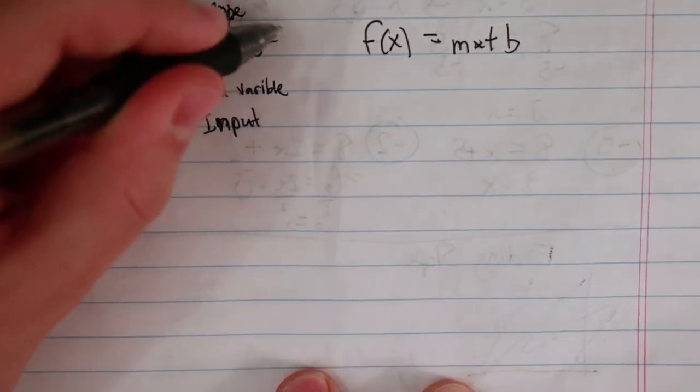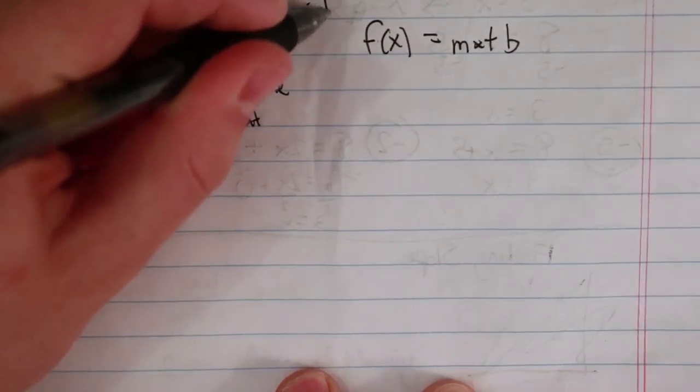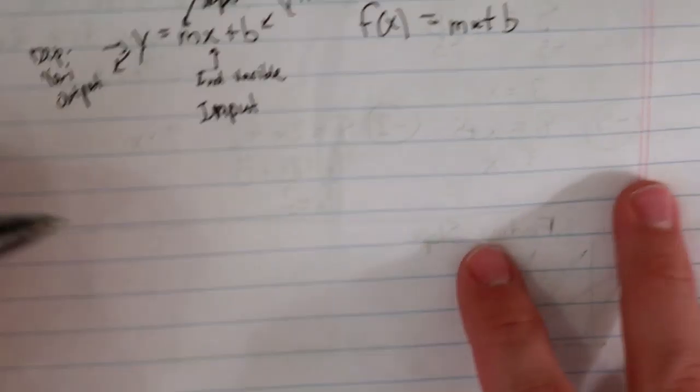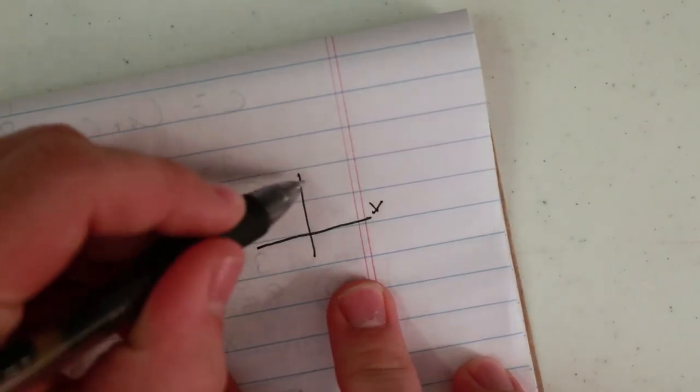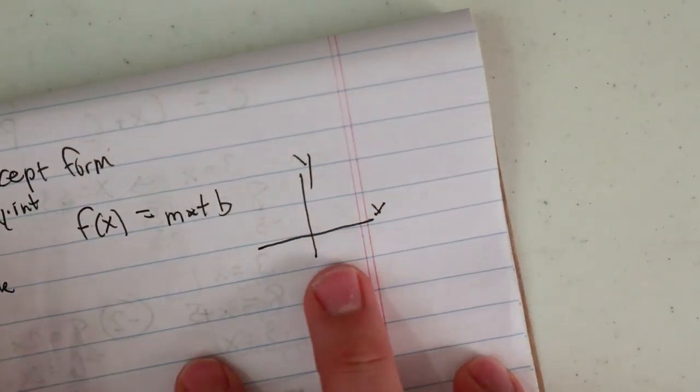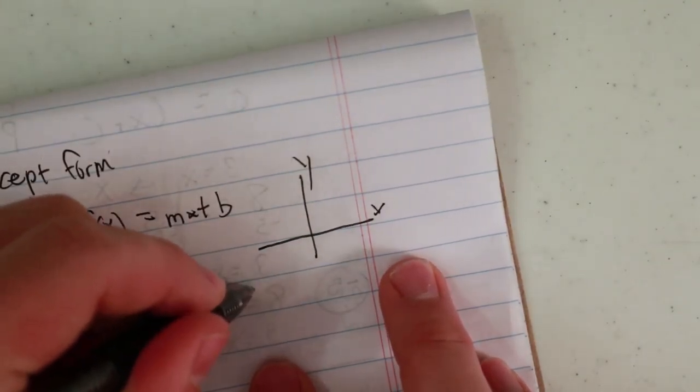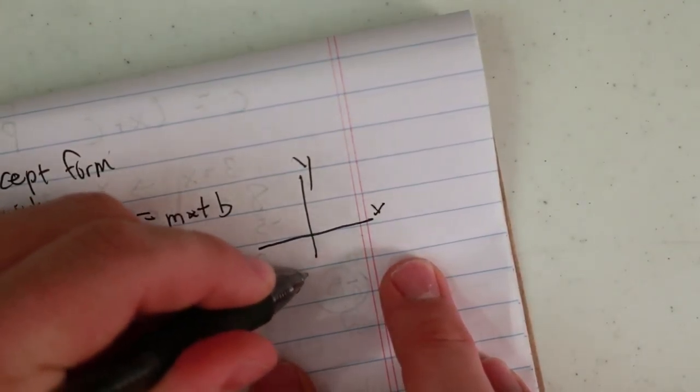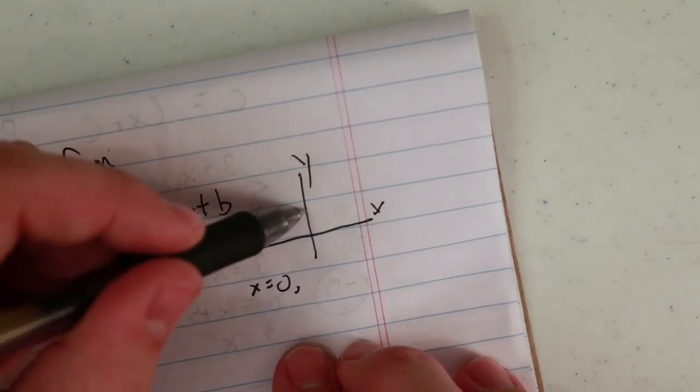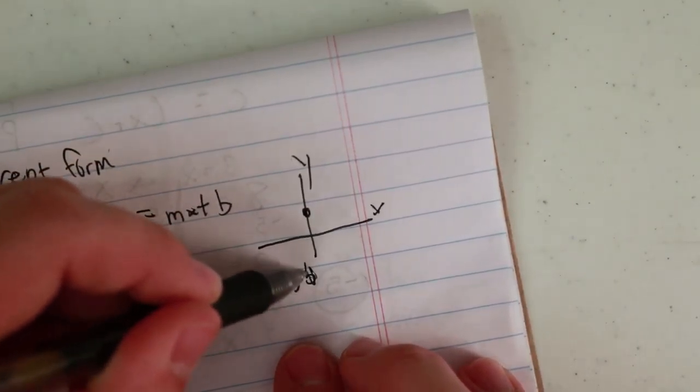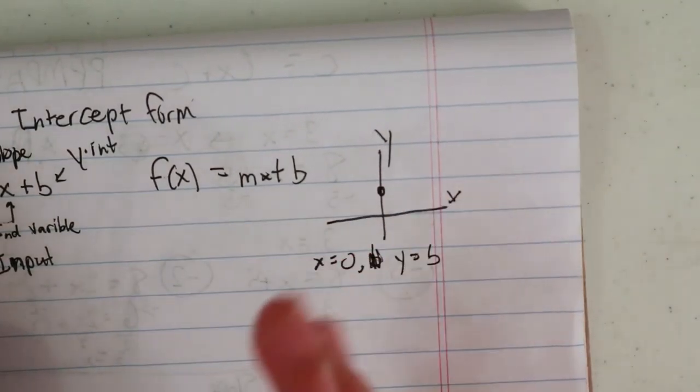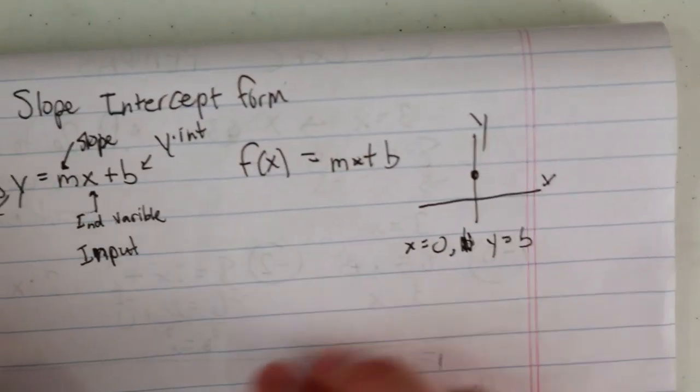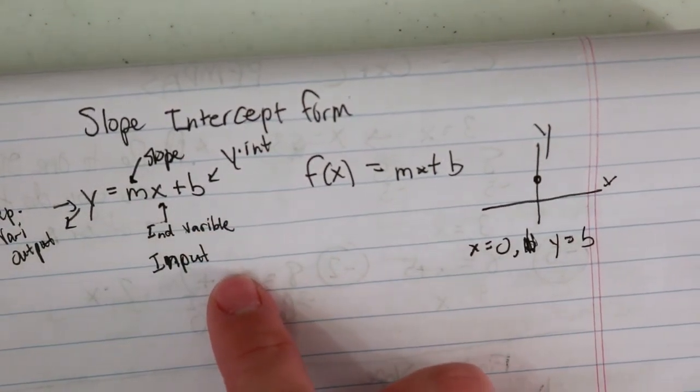And then b equals the y-intercept. So this is the point on a graph. We have our x-axis and our y-axis, and the y-intercept is the point at which x equals zero, so y would equal a number, and y equals b because that's your y-intercept point. So it's the point at which the line crosses the y-axis, and that is the y-intercept.